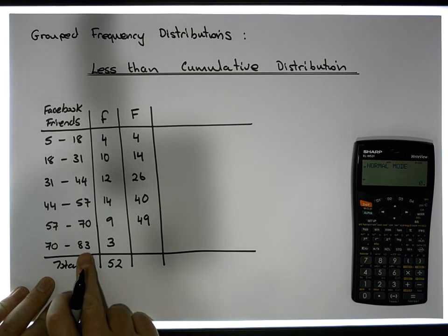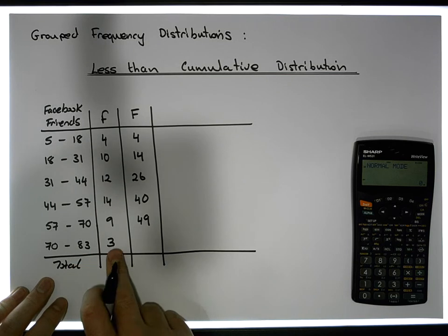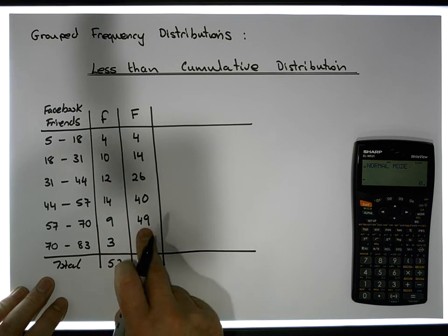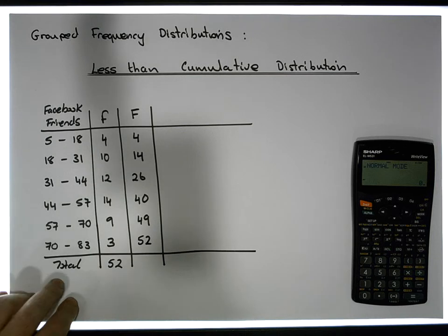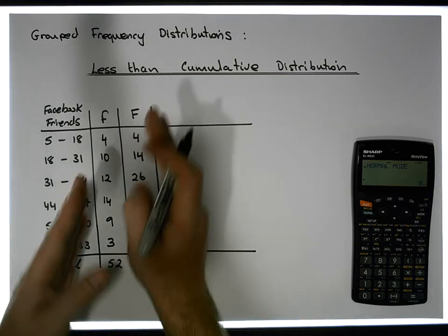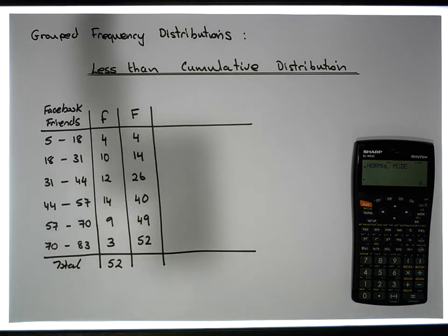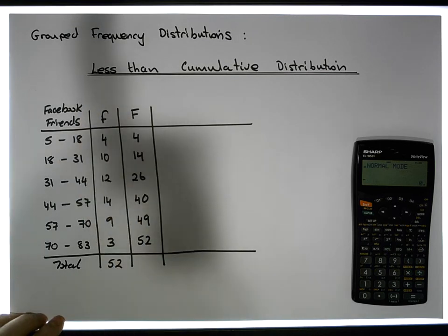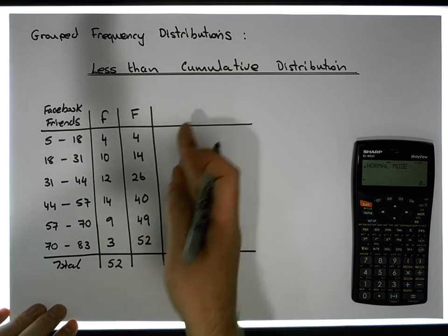Finally, how many observations are less than 83? All of the observations — all 52 of them — are less than 83. That's the 3 plus the 49, which gives us 52. This column, augmented onto the classes, is what's known as a less than cumulative frequency distribution.